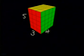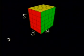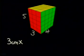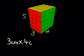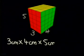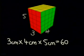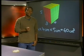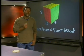In this case, we actually just multiplied 3 centimeters by 4 centimeters by 5 centimeters, which gives us 60 cubic centimeters. Let's see if you can use this knowledge of volume to answer a few questions.